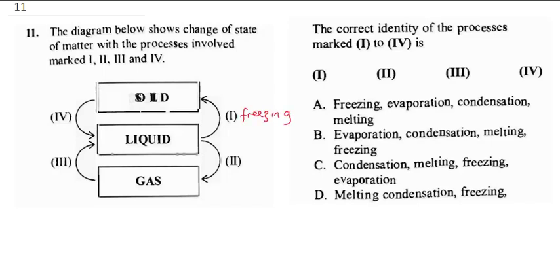When you have a liquid and you're boiling water and it becomes vapor, you call this evaporation. When you have gas becoming liquid, this is called condensation — that is when you have a vapor and it becomes liquid.